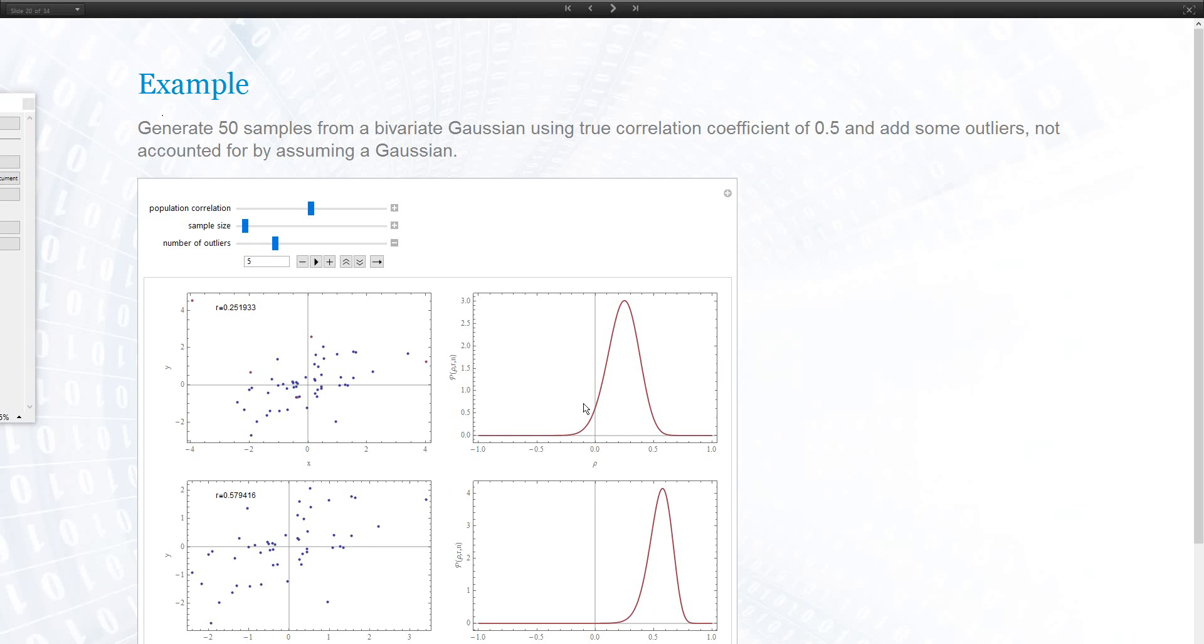With this information we could now compute the probability that the population correlation coefficient is, for example, larger than 50% or so and integrate the curve, or that it's above zero, that there is some correlation.